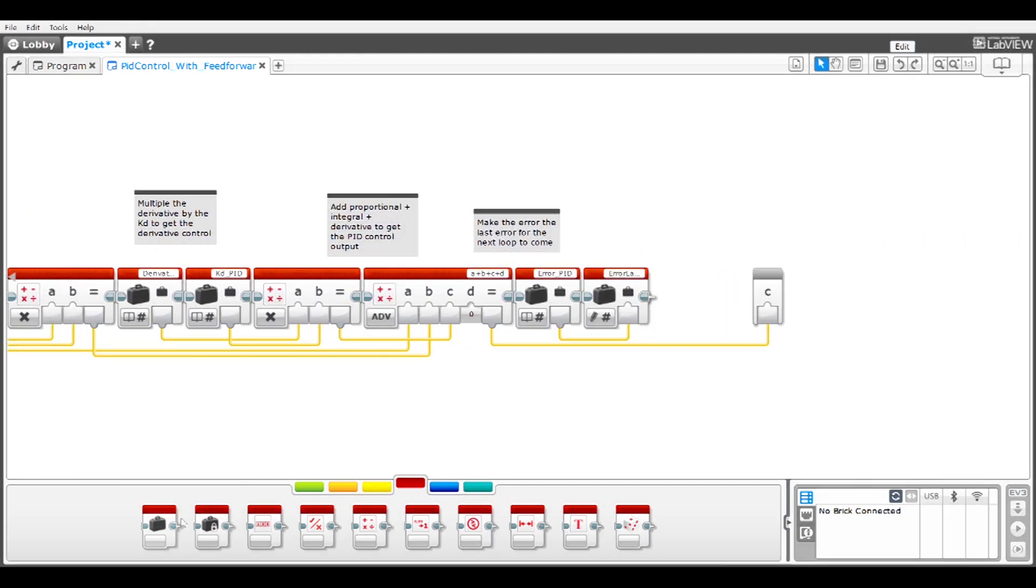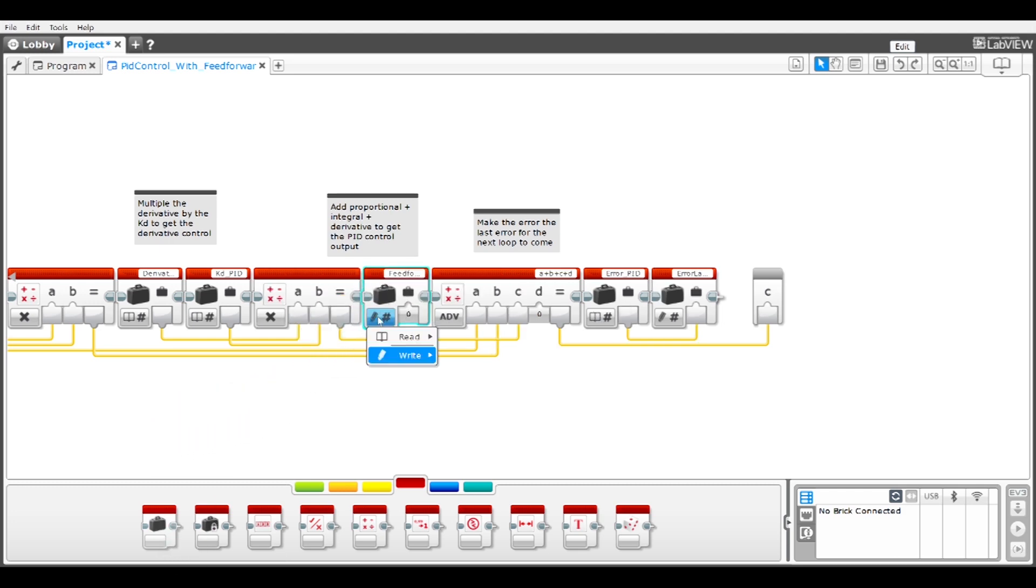We insert the feed forward variable block and add the proportional, integral, and derivative control values and the feed forward to calculate the PID with feed forward control output. The current error is copied to the last error variable to be used in the next loop.